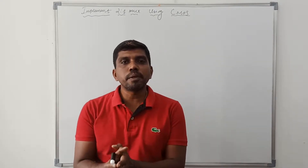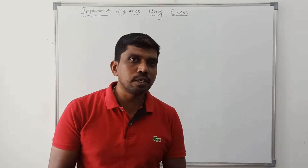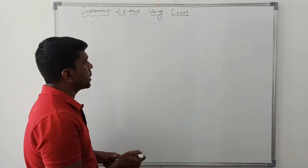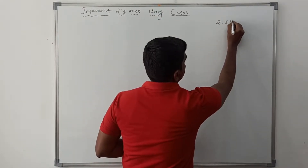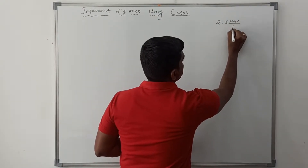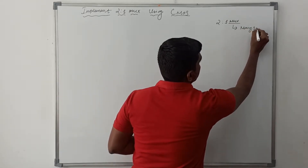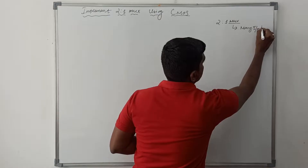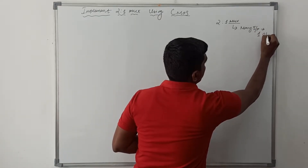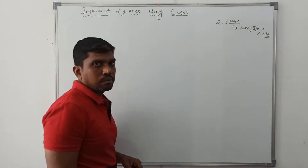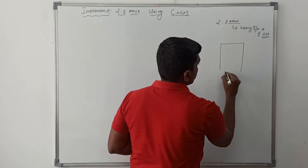Today's class I am going to discuss about implementation of 2-to-1 mux using CMOS. Before drawing the CMOS circuit, first I draw the block diagram of 2-to-1 mux. Mux means many inputs to one output, so it is called a mux. This is a simple block diagram of 2-to-1 mux.